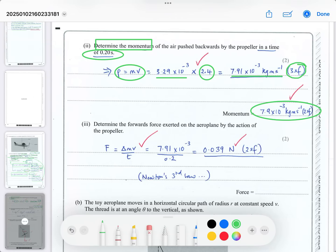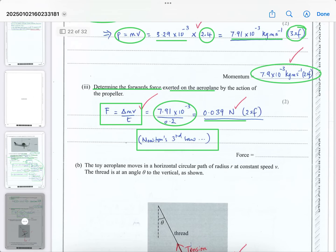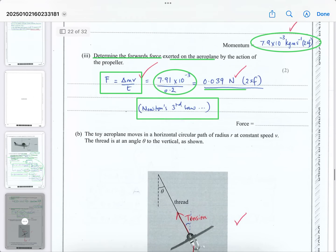to match the data precision. Next, determine the forward force on the airplane using Newton's third law - if air is pushed backwards, there's an equal opposite force forwards. Force equals rate of change of momentum (Newton's second law). Divide the momentum change by 0.2 seconds to get 0.039 N to two significant figures.